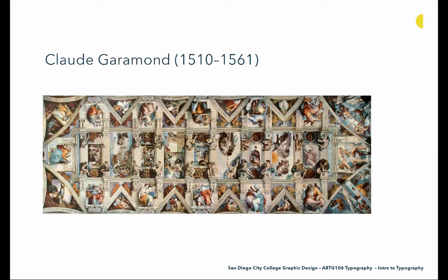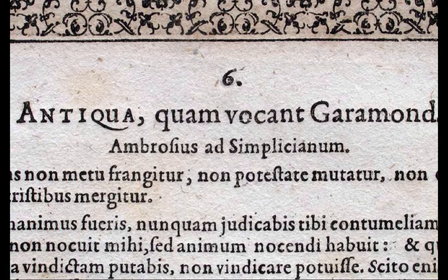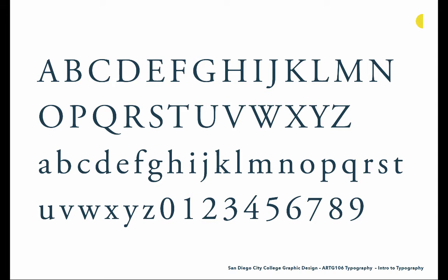Then we have Claude Garamond, and at this point France becomes the type center of the world — mostly due to Garamond. He develops and refines on the work of Francesco Griffo, building some of the most beautiful old-style typefaces that have ever existed. Although Garamond created gorgeous work, it is often misattributed — some pieces actually belong to Jean Janin and Robert Grandjean, due to the similarity of their work and gaps in historical records. Here's an example of Adobe's Garamond revival.